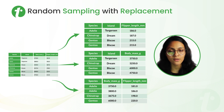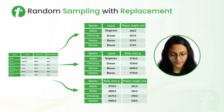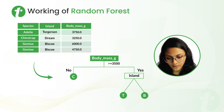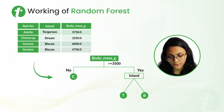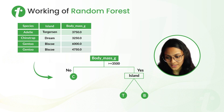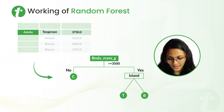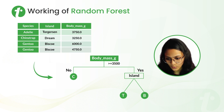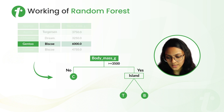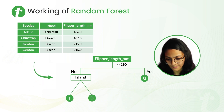After random sampling with replacement, we make decision trees for every random sample. For the first random sample, the decision tree determines the body mass of the penguin — if it is greater than 3,500 or not. If not, then it's a Chinstrap. If the island is Torgersen, then the species is Adelie; and if the island is Biscoe, then the penguin is Gentoo. For the second random sample, the decision tree determines the flipper length — if it is greater than 190 or not.